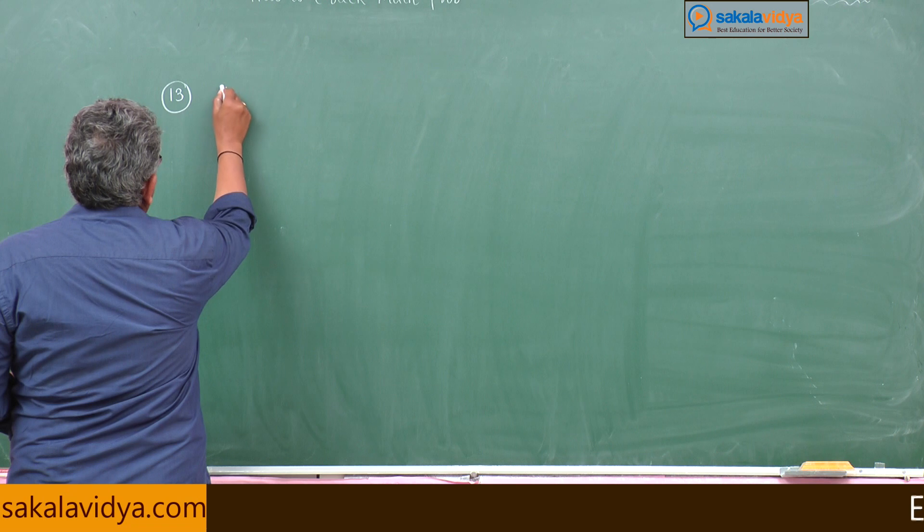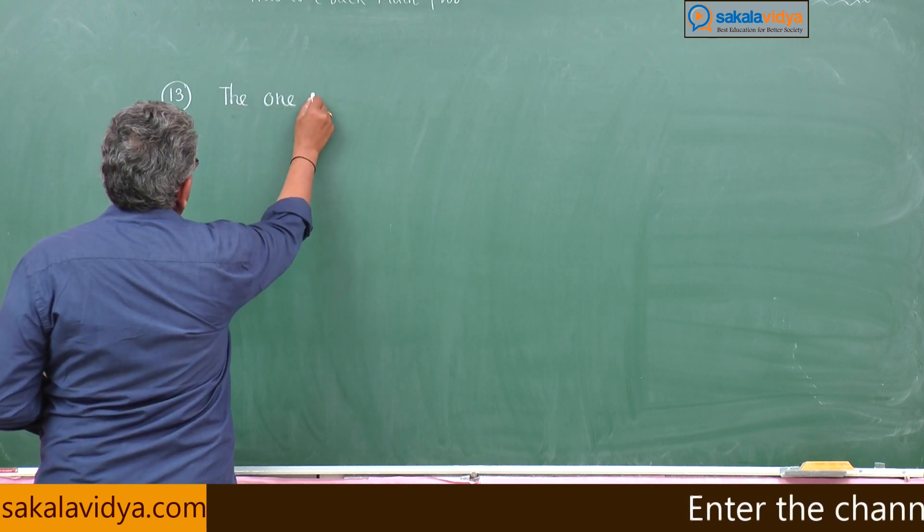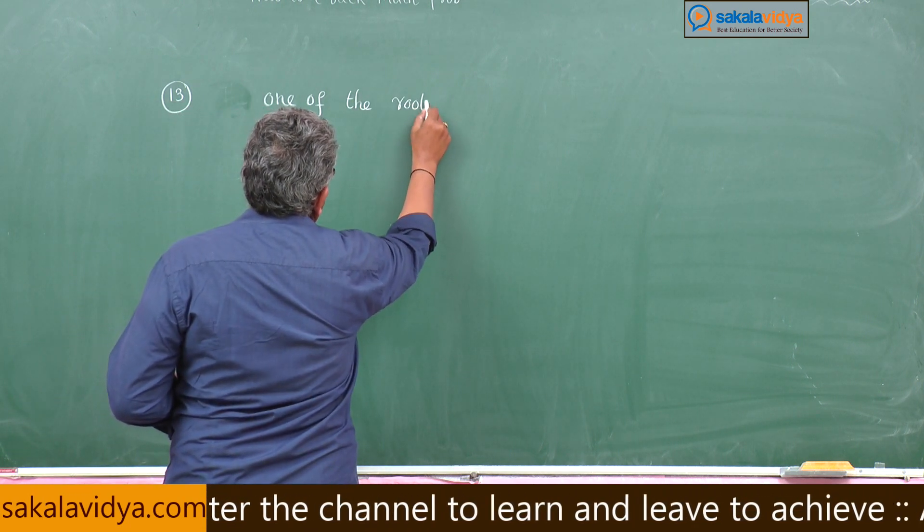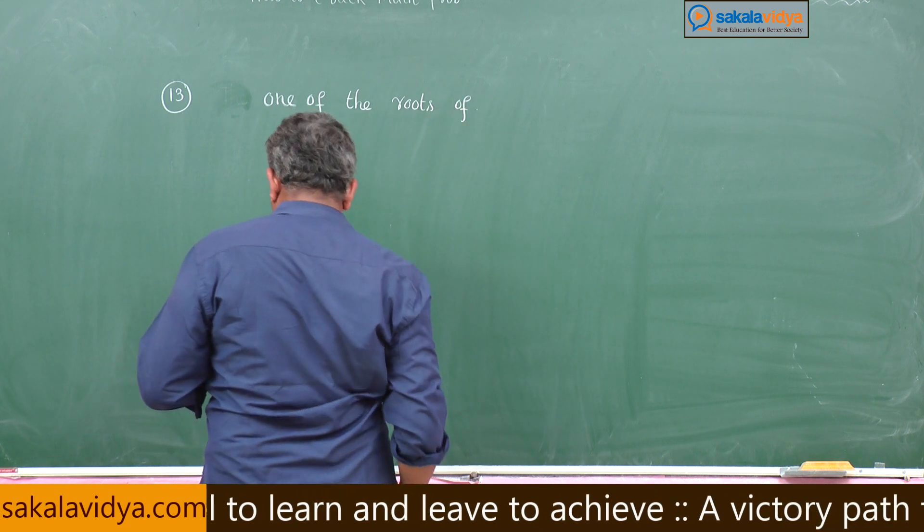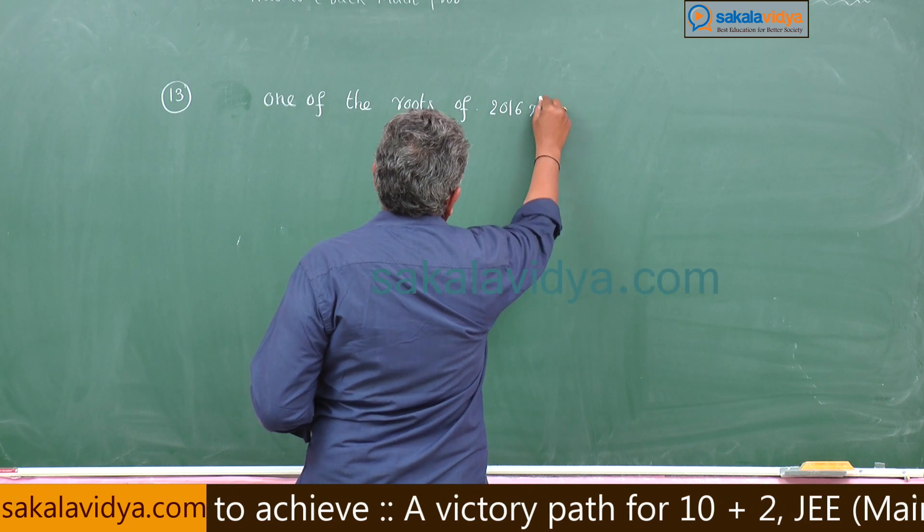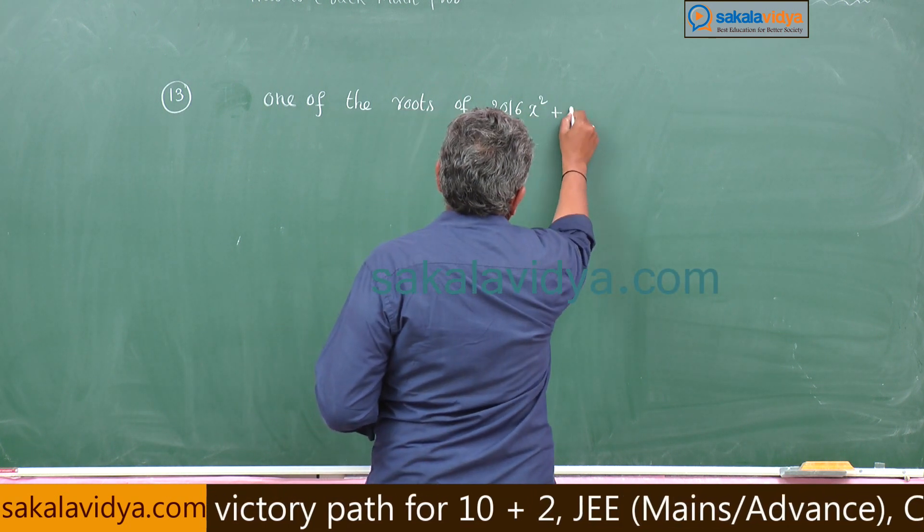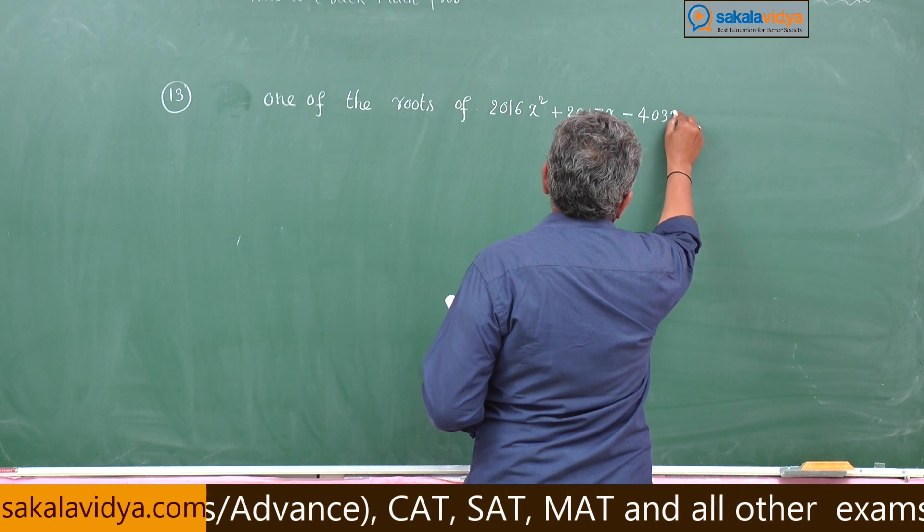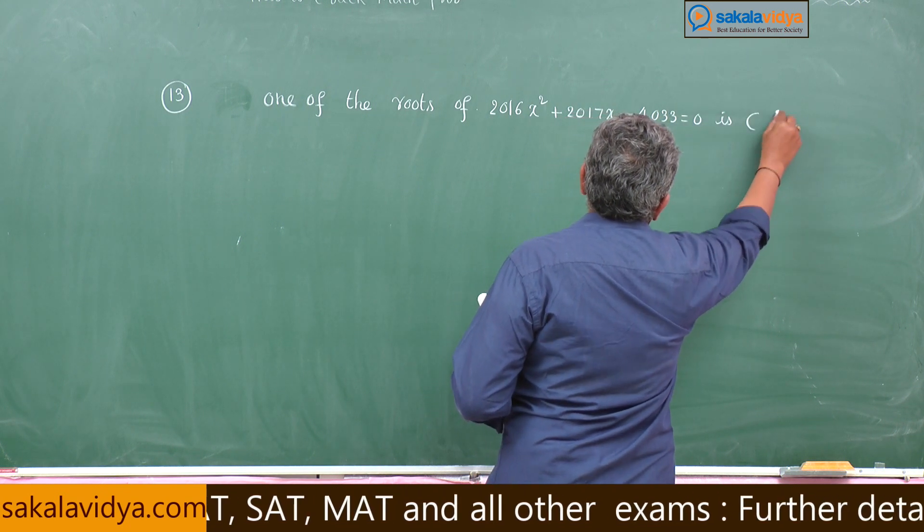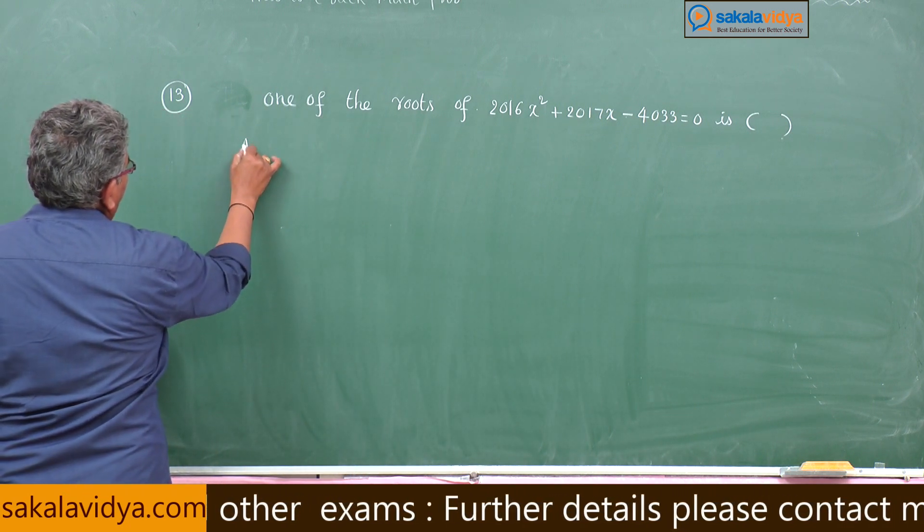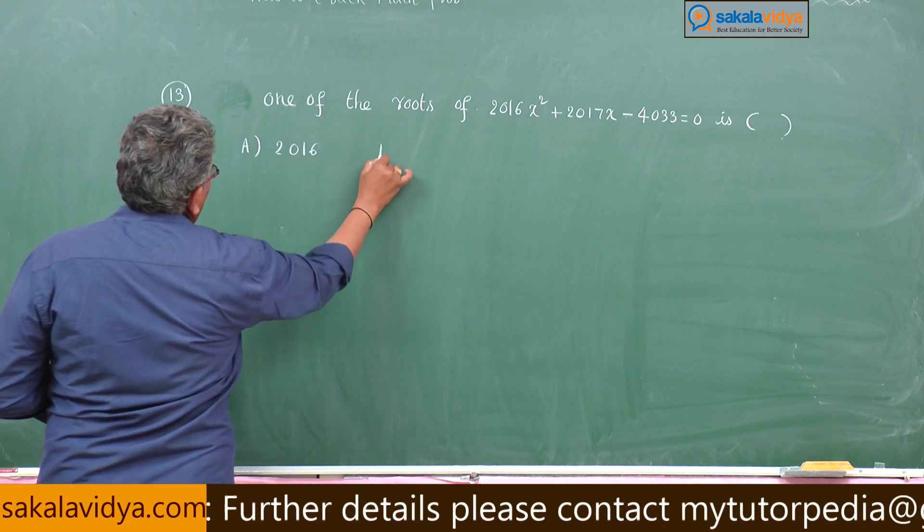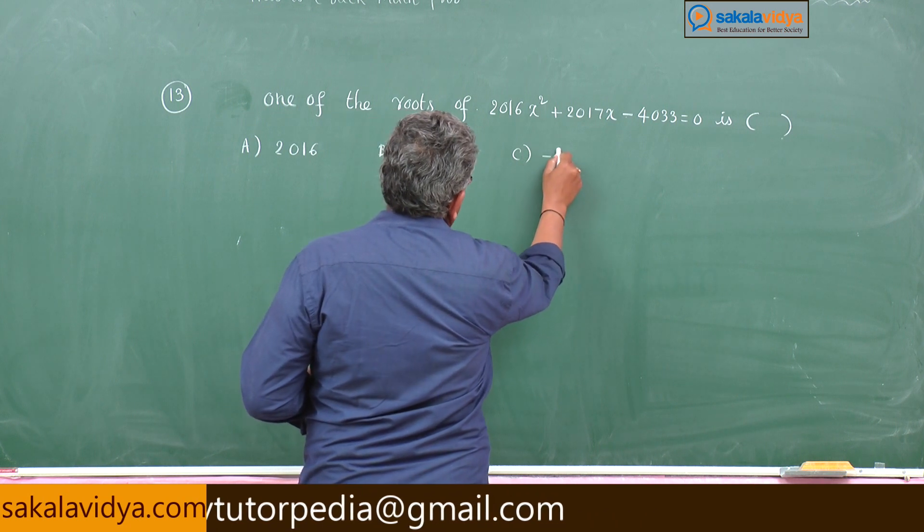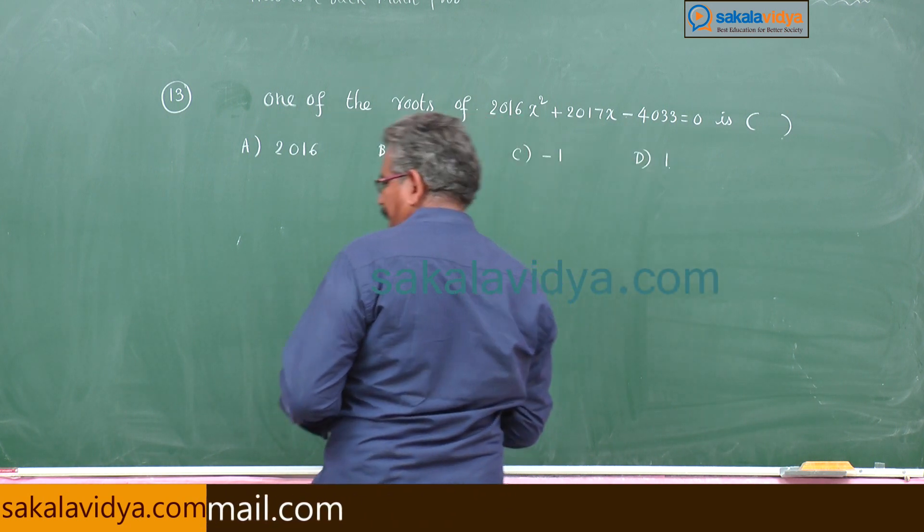One of the roots of 2016 x square plus 2017 x minus 4033 equal to 0 is - first option: 2016, second option: 2017, third option: minus 1, d: plus 1.